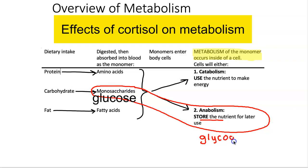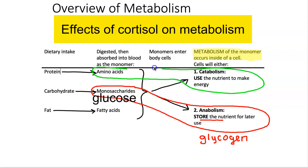As far as the other nutrients go, proteins are broken down into amino acids and fats into fatty acids. Under the effects of cortisol, cortisol promotes use of those nutrients. Amino acids that enter into our cell will get used to make energy — same thing with fatty acids. Fatty acids are going to be utilized.